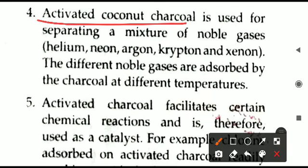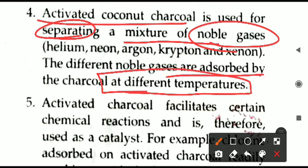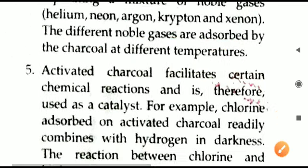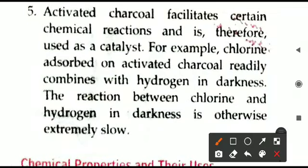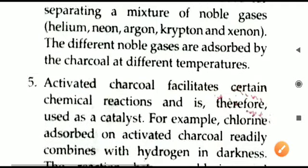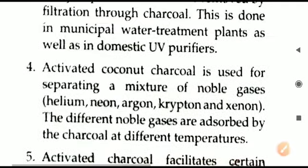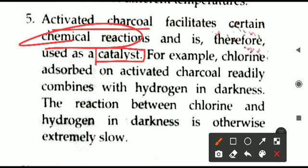Activated coconut charcoal is used to separate a mixture of noble gases. If noble gases are present together in the same container, they can be separated by heating the mixture and passing it through activated coconut charcoal. At different temperatures, adsorption of different noble gases takes place, allowing them to be separated. Examples of noble gases include helium, neon, argon, krypton, and xenon.